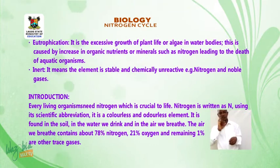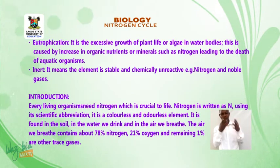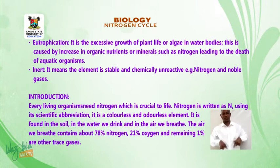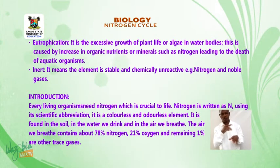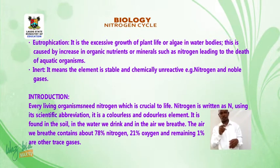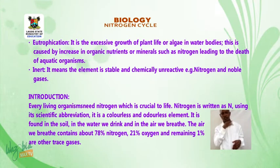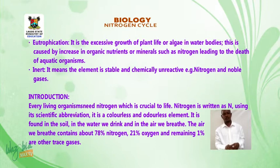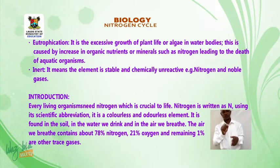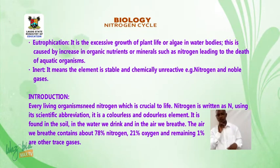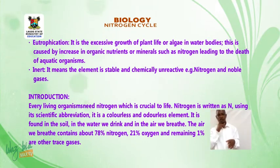Eutrophication is the excessive growth of plant life or algae in water bodies. This is caused by an increase in organic nutrients or minerals such as nitrogen, leading to the death of aquatic organisms. Inert means the element is stable and chemically unreactive — for example, nitrogen and noble gases.